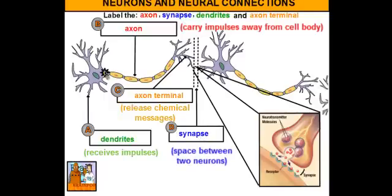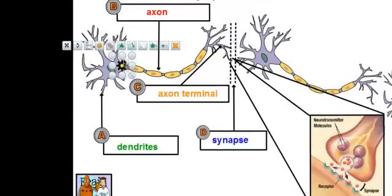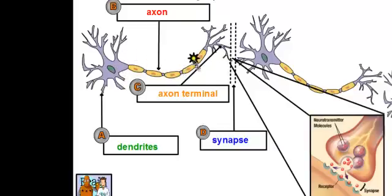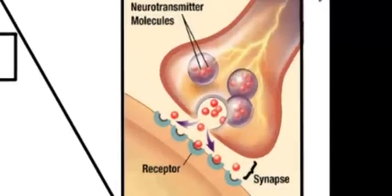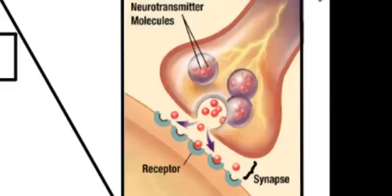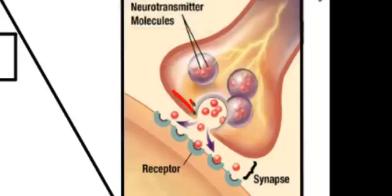So what happens is this: the dendrites receive a message and then the cell body takes that message and converts it to electricity — that's why we have the little starburst here. That electrical impulse is going to jump down the neuron along the axon until it gets to the axon terminals. Once it reaches the axon terminal, you'll notice that the electrical signal comes down to the axon terminal but it doesn't jump the gap. As microscopic as the synapse may be, the gap is too big for the electrical signal to jump. So instead, it starts the production of neurotransmitters, which are chemicals, contained in compartments called vesicles. These vesicles are going to fuse with the cell membrane of the axon terminals and then release these neurotransmitter chemicals into the synapse.